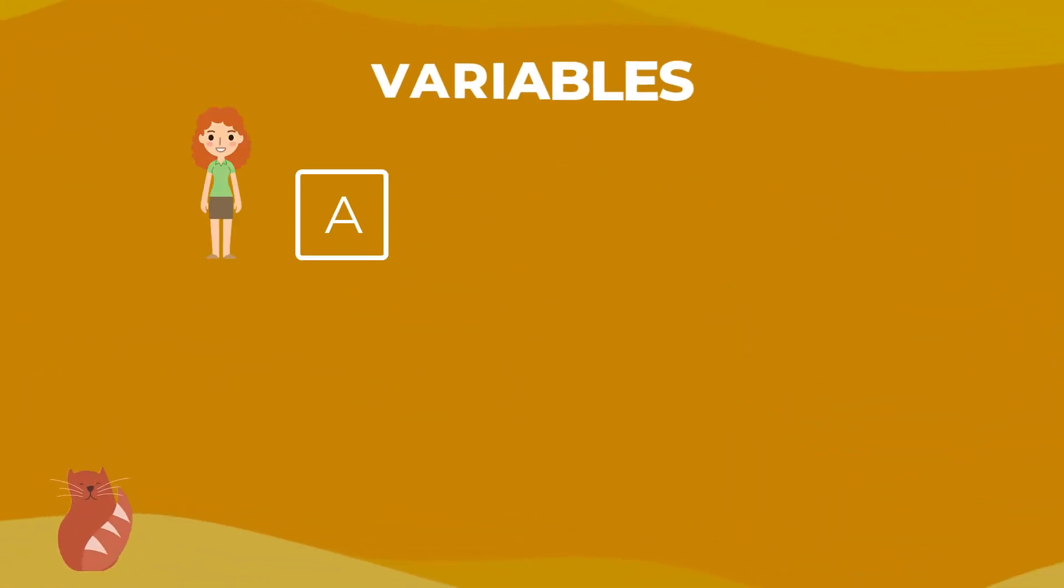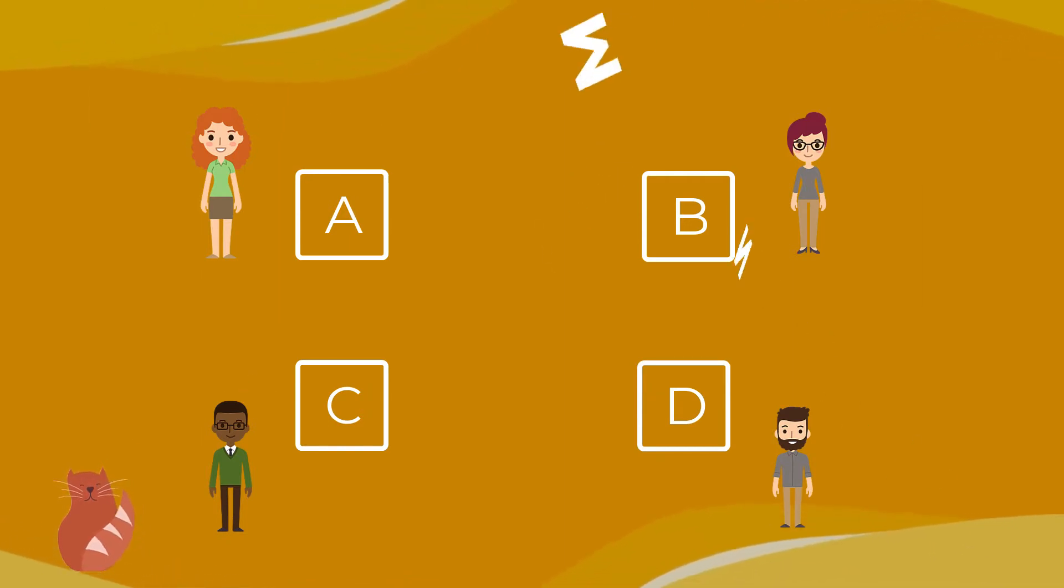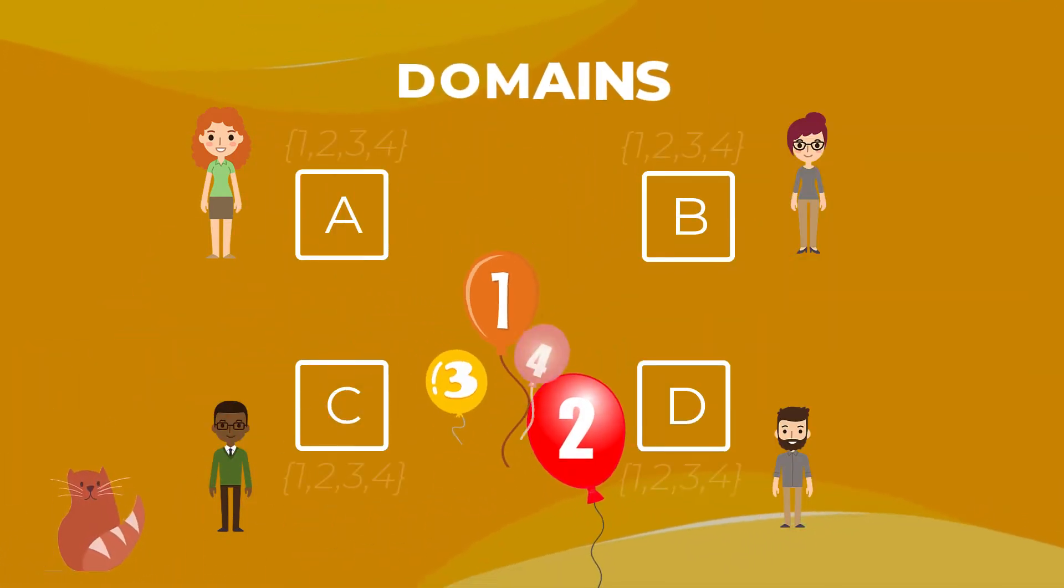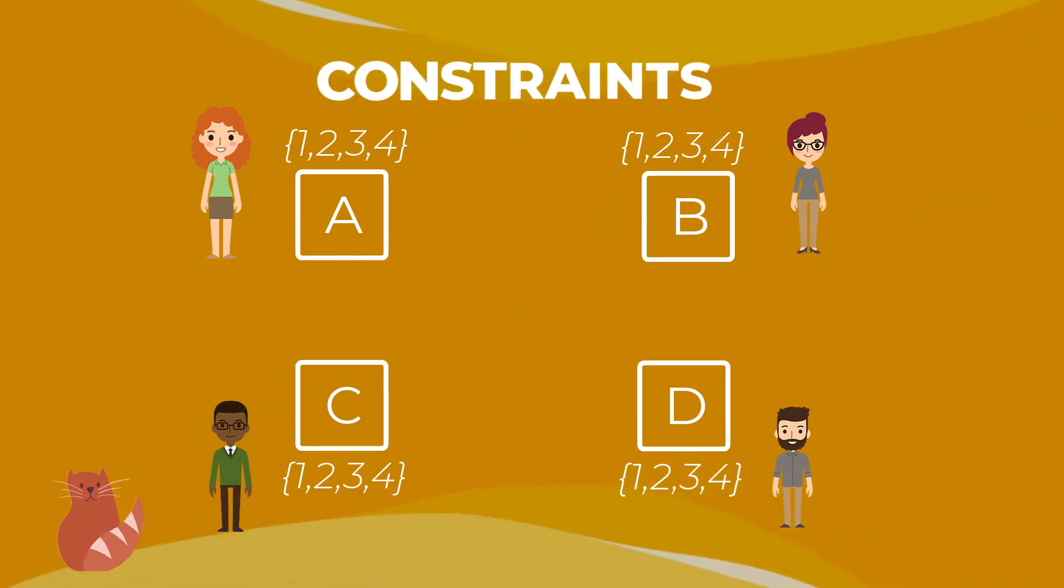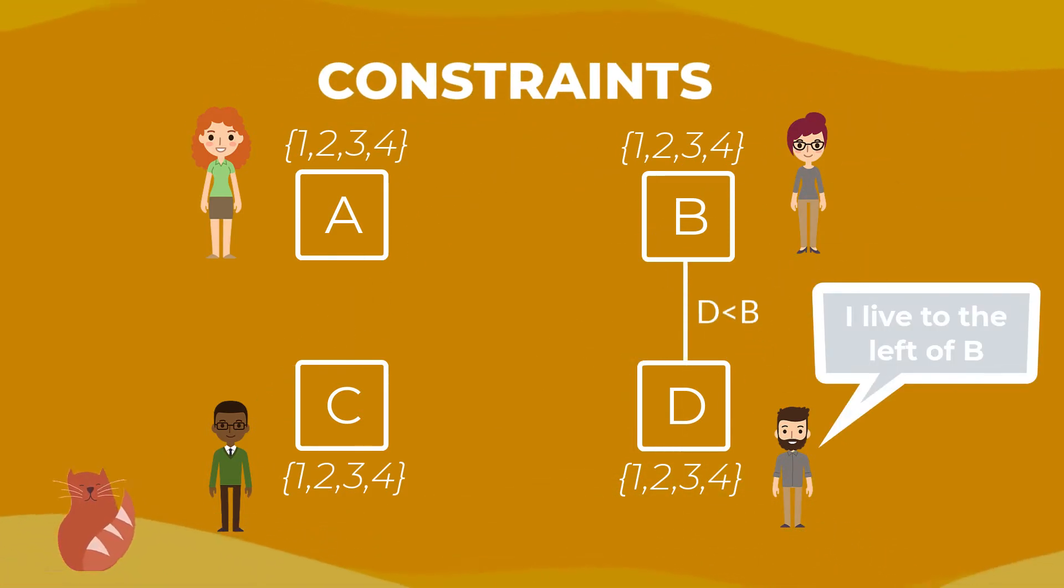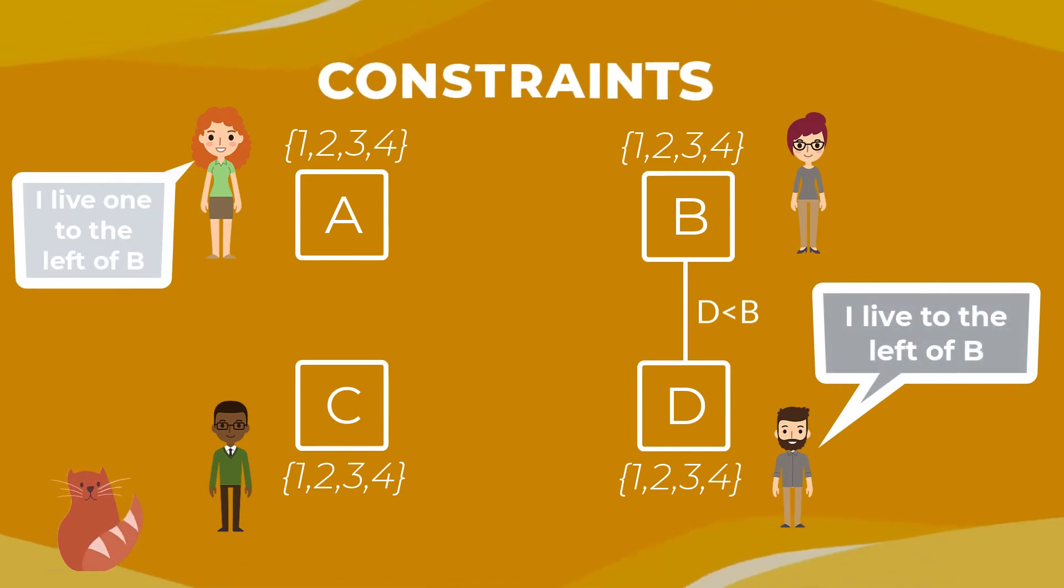First, you need variables, one per family. The domains are the numbers of the houses. All the clues the families gave us are links between the variables. Simple equations that constrain the possible choices.